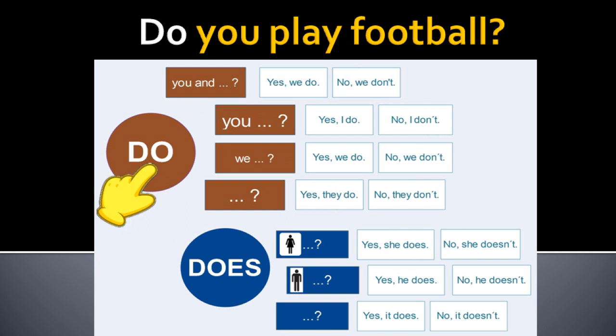So we are in the brown circle. Now look what is after do. You. Is it you and hmm? No. Is it you? Yes. And on the right you can see the possible answers. Yes, I do. Or no, I don't.